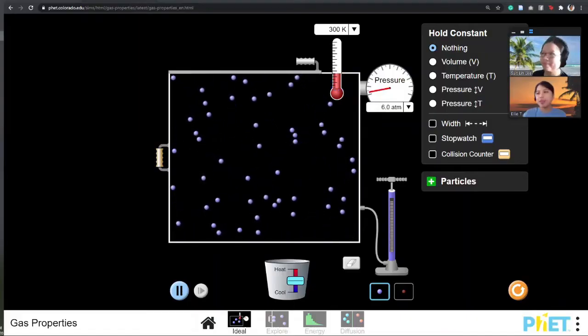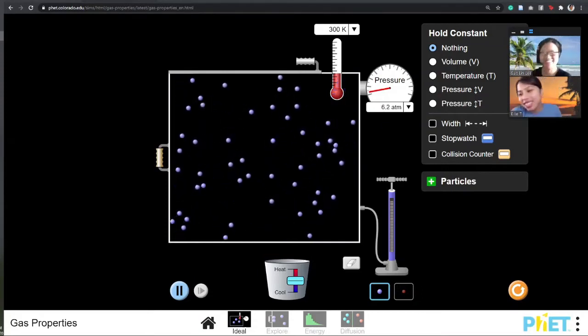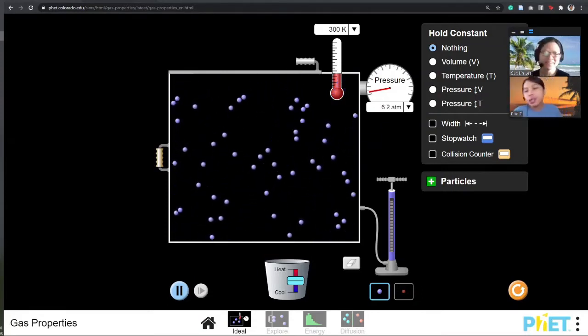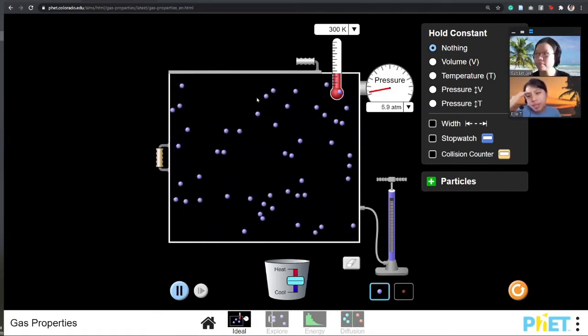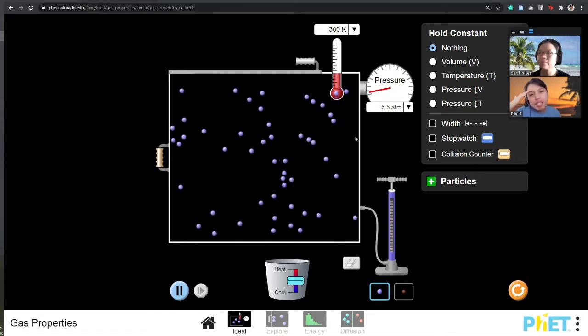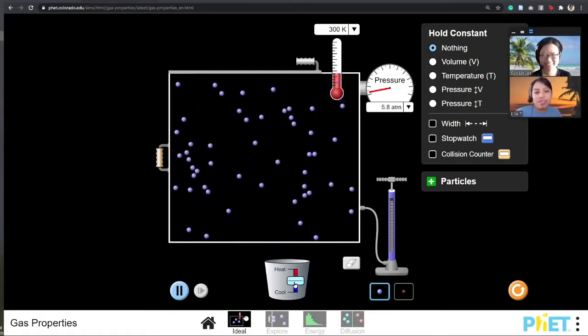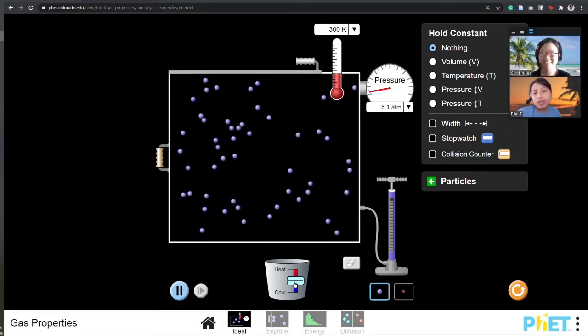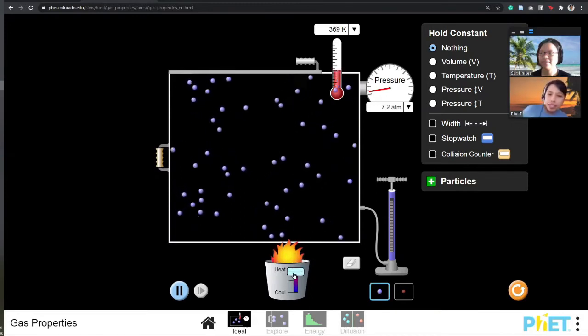So here we are again, back at our good old box of particles. If you think of internal energy, or you want to increase that, we think of temperature one way. So how will we increase the temperature, Ms. Lee? I click the bucket. Okay, so you add some flame inside there. We try again, add the heat.